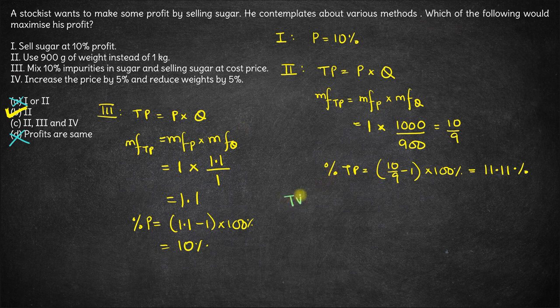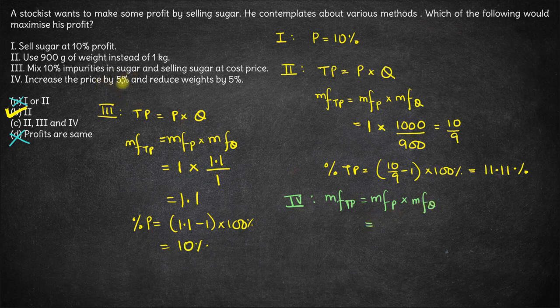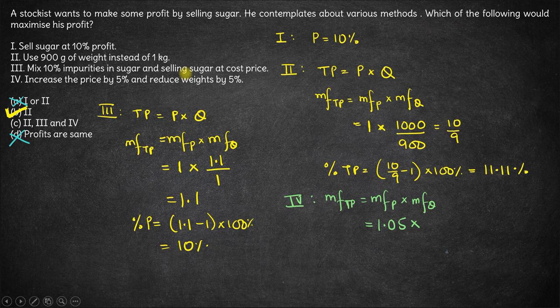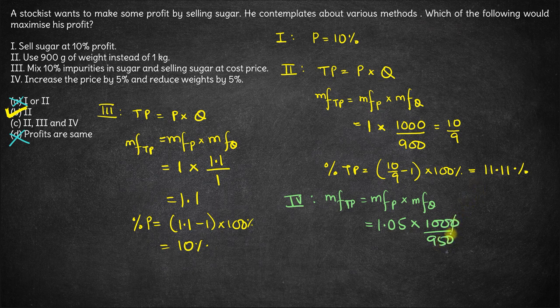Even so, let's solve the fourth part: he increases the price by 5% and reduces the weight by 5%. Multiplication factor for total price equals multiplication factor for price into multiplication factor for quantity. Price increases by 5%, so multiplication factor for price is 1.05. He reduces weight by 5%, so a customer wanting 1000 grams gets only 950 grams. The shopkeeper sells 950 grams as 1000 grams, so multiplication factor for quantity is 1000 upon 950. Simplifying: 1.05 × (1000/950) = 21/19.